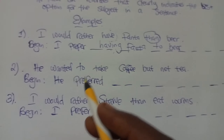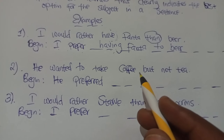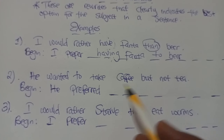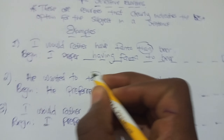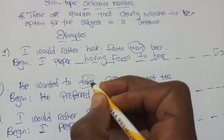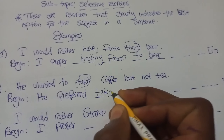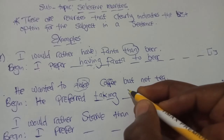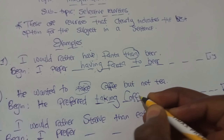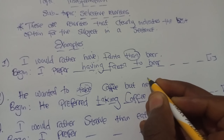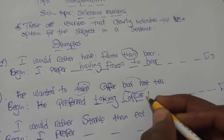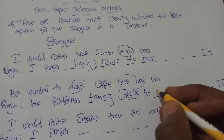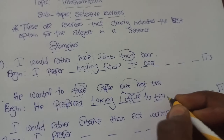Question 2: 'He wanted to take coffee but not tea.' So, begin with 'He preferred.' The verb here is 'take,' which is now converted to gerund form: 'He preferred taking.' Taking what? 'He preferred taking coffee.' Where it says 'but not,' we replace it with 'to' in reference to 'preferred,' giving us: 'He preferred taking coffee to tea.'